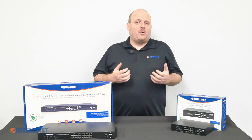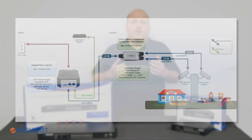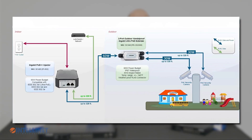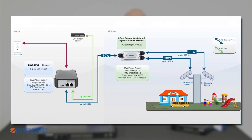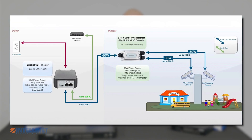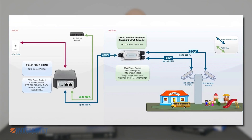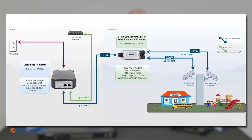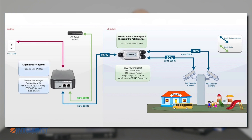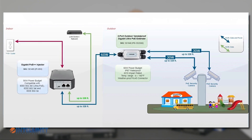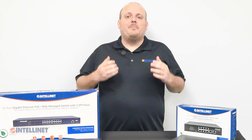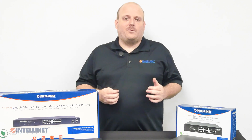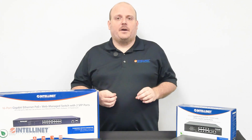Let's take a look at a real-life example. Using our 561495 BT injector, we can supply one device with 60 watts and then split it to 30 watts at two devices. If you swap the extender out with our AT or AF extender, you'd only get 15 watts per port instead of 30. Alternatively, you can use a BT injector with a high-powered camera that needs more than 60 watts and connect it directly to that camera.